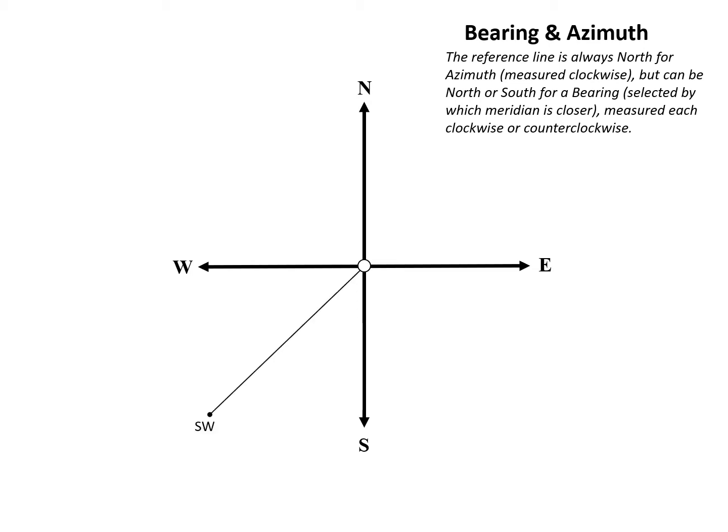We can look at a line that's in the southwest position. For this particular line, the azimuth is 225 degrees. That's measured clockwise from north. We always keep that reference angle at north, and it has a bearing of south 45 degrees west. So we start at south and turn 45 degrees towards the west. That's what the bearing is describing for us.